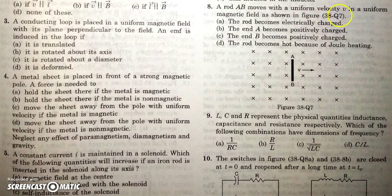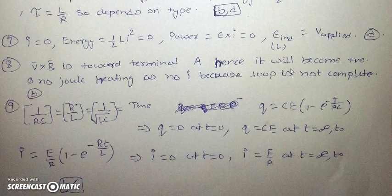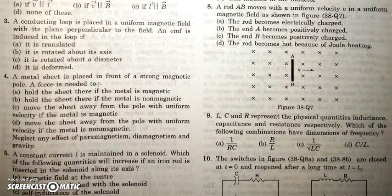In question 8, rod AB is moving uniformly in a uniform magnetic field. The charges in the rod will get segregated — terminal A accumulates positive charge and terminal B accumulates negative charge, but the rod does not become electrically charged overall. There will be no Joule heating as there is no complete loop, hence no current. V × B gives the direction of the positive terminal, which is towards A, so A will be at higher potential.